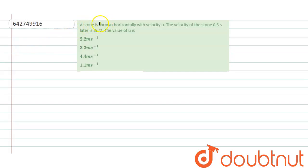A stone is thrown horizontally with velocity u. The velocity of the stone 0.5 seconds later is 3u/2. What is the value of u? Let's find out.